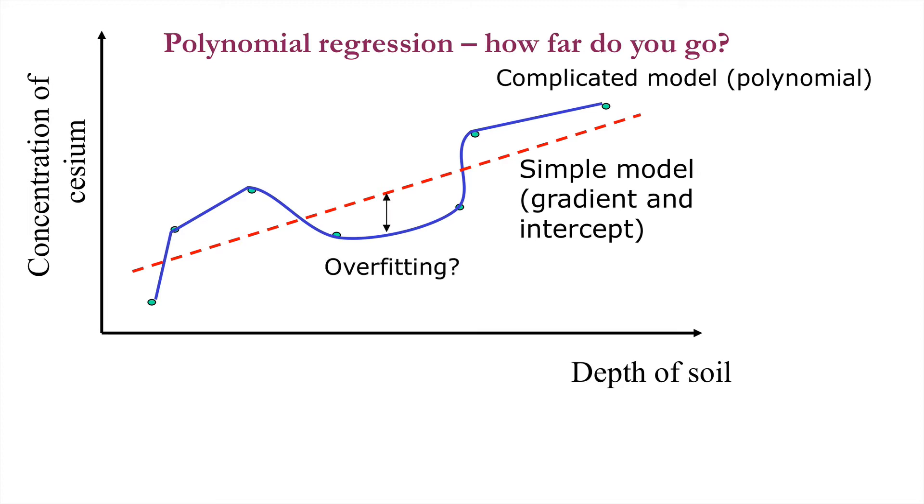Because when we fit extremely complicated models to data, we could be overfitting our model to the data. What do we mean by overfitting? Well, it arises when we attempt to explain the noise as well as a signal in any given relationship. For example, we might fit a high order polynomial to this type of graph here.